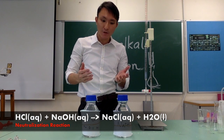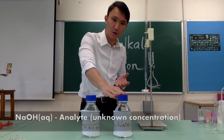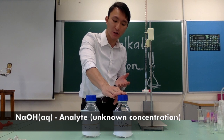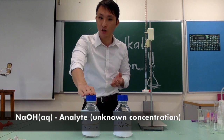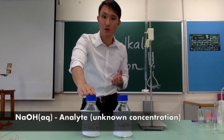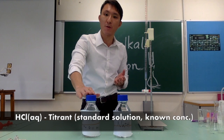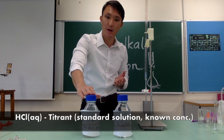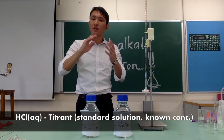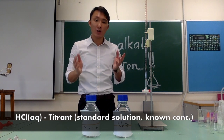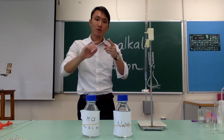Our objective is to find the concentration of sodium hydroxide solution using a standard hydrochloric acid solution of 0.1 mol per dm³. I will divide the whole titration into four parts.